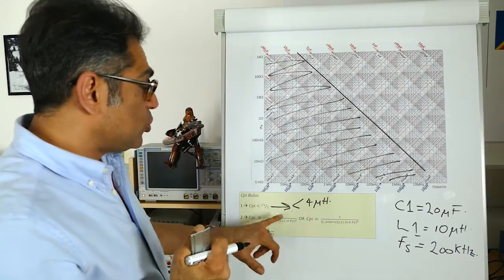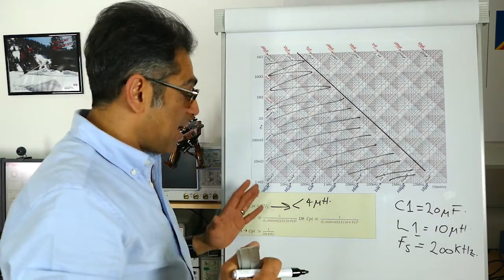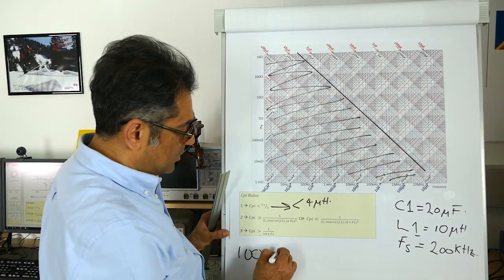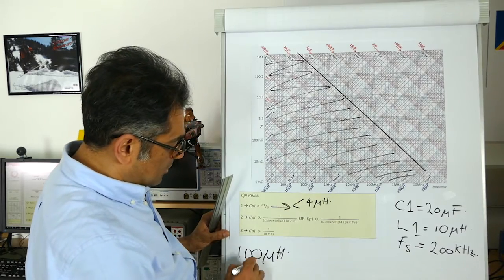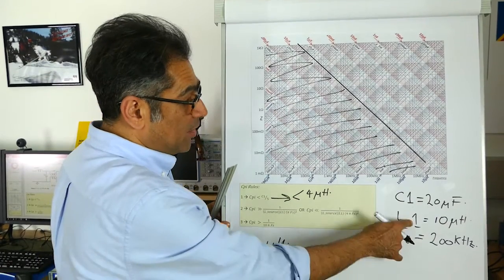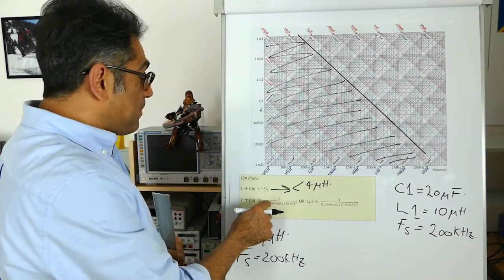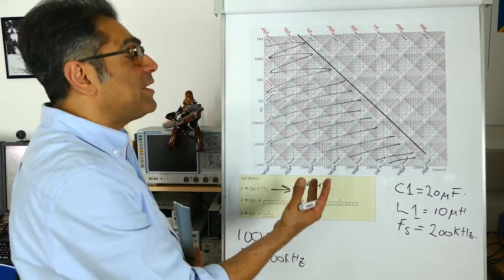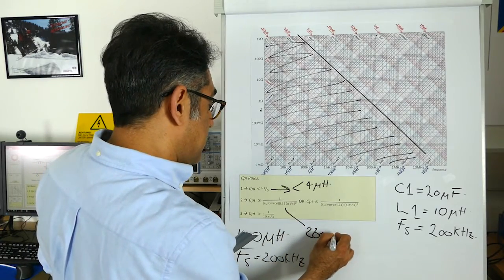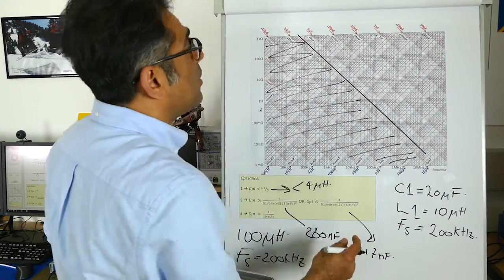Then rule two gives me how far away from the resonance I have to be, depending on L source, which I said was 100 microhenries. That was L source. Switching frequency in my case was 200 kilohertz. And L1 is 10 microhenries. And these two equations give me the Cpi that has to be either bigger than 280 nanofarads, or smaller than 17 nanofarads.